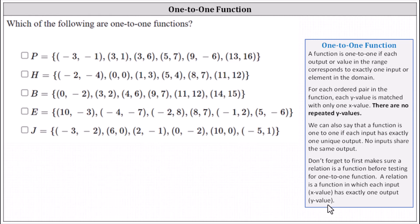So let's first determine whether P, H, B, E, and J are functions before we determine whether they are one-to-one functions. Looking at P, we'll analyze the x values: negative three, three, three, five, nine, and thirteen. Notice we do have a repeated x value of three. The input of three actually has two outputs, one and six, and therefore P is not a function. If it's not a function, it can't be a one-to-one function. Let's mark this as not a function.